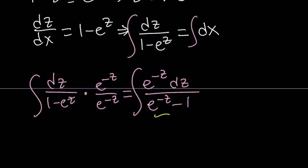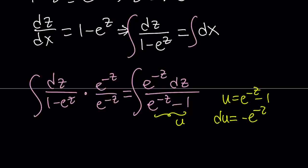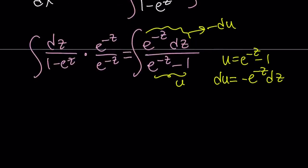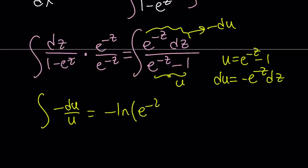We're going to call the denominator u. So u equals e to the power of negative z minus 1, and du equals negative e to the power of negative z dz. We do have e to the power of negative z dz, so that becomes negative du. After u-substitution we get negative du over u, and the integral of du over u is ln u. So this becomes negative ln of e to the power of negative z minus 1.